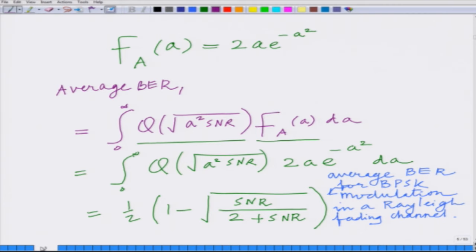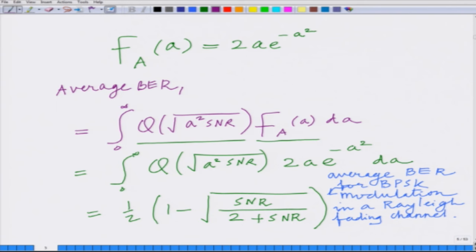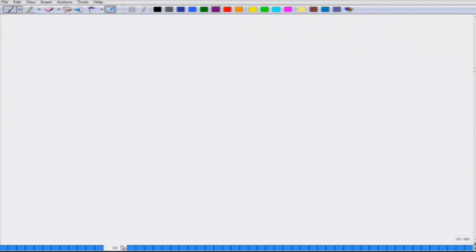Remember in the previous module we had stopped short of the complete derivation. What we said was we have to evaluate the average bit error rate expression Q of square root of A squared times SNR, with respect to the distribution of the amplitude of the fading channel coefficient A, that is given by the Rayleigh density 2A e to the power minus A squared. This integral — the average bit error rate — we are going to derive the final expression today, that is to evaluate the exact expression for the bit error rate.